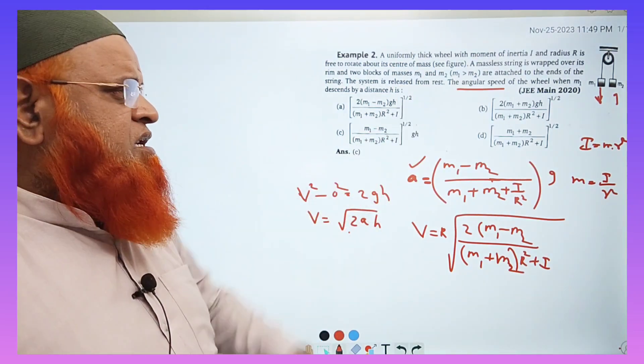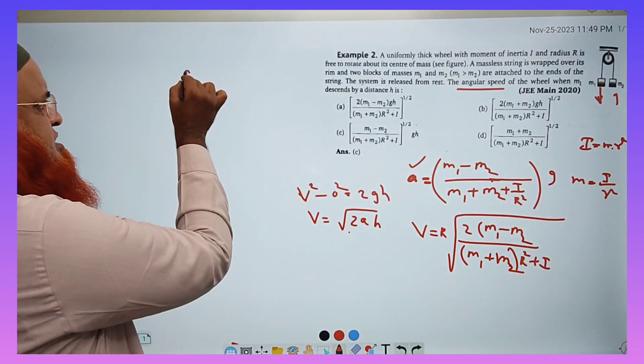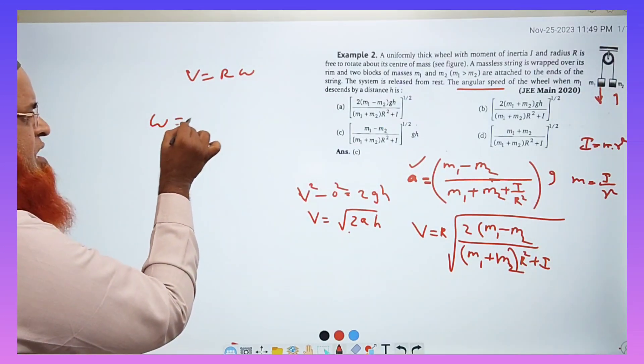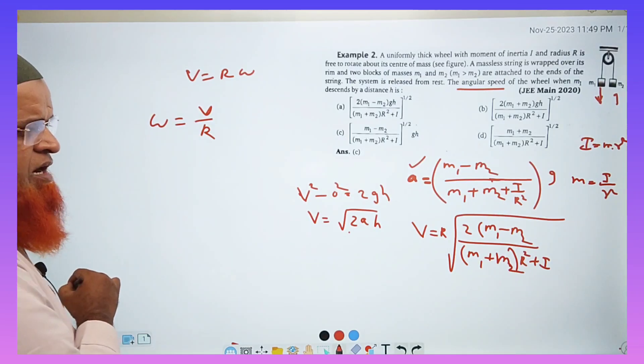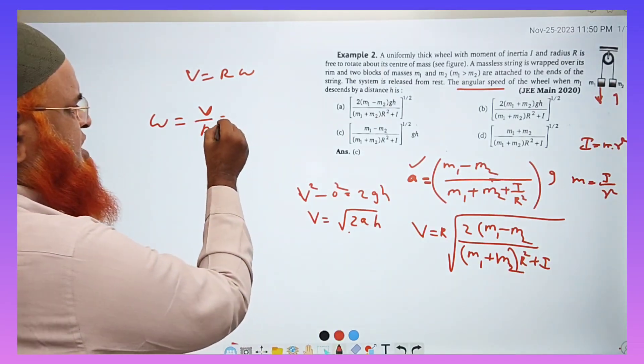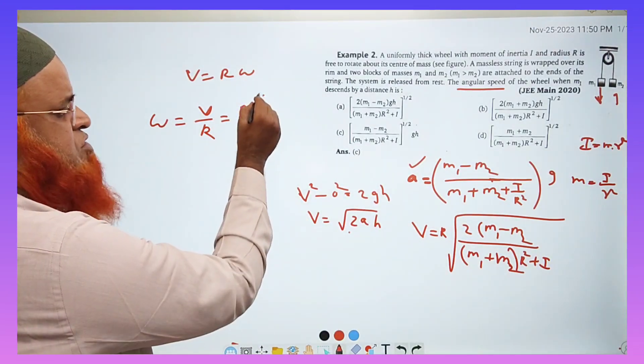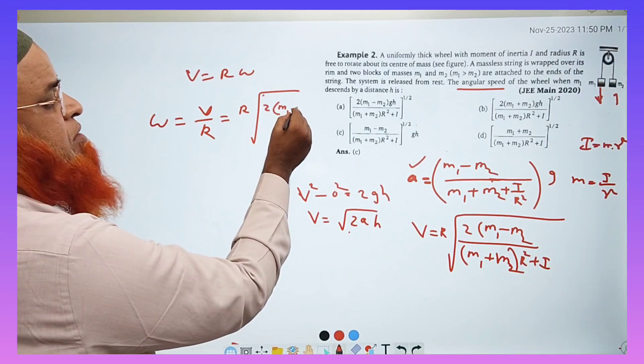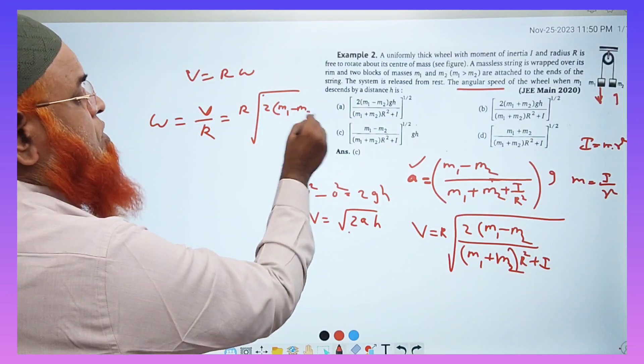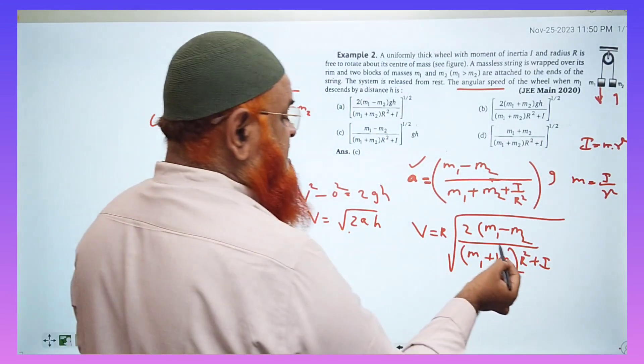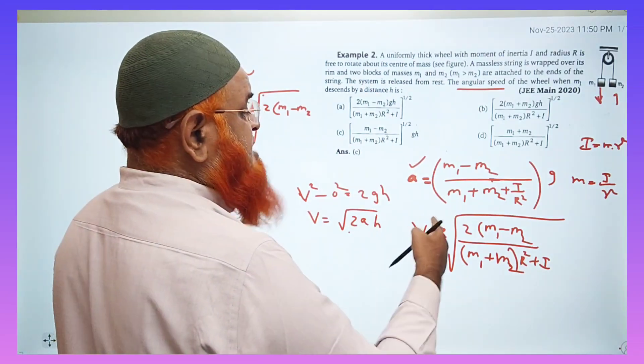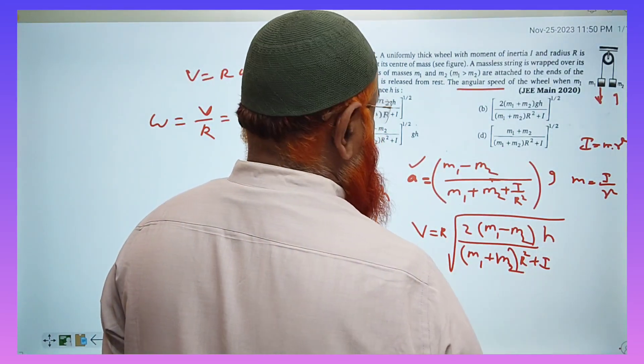But what is angular speed? You all know that v is equal to r omega, so omega is equal to v by r. So if you substitute the value of v here, that is r into square root of 2 into m1 minus m2, and here acceleration we have substituted here, square root of 2ah. h also we have to write, you have to add h also.